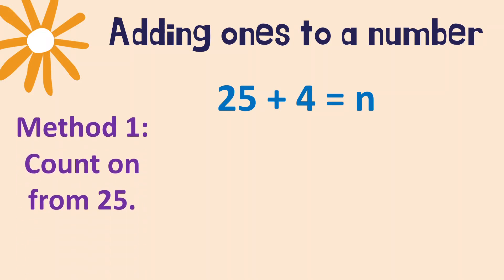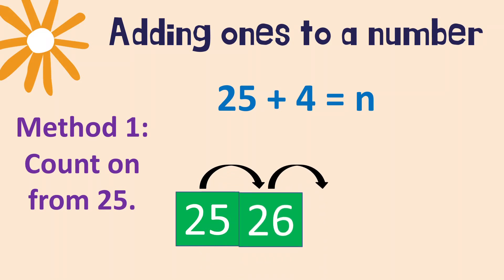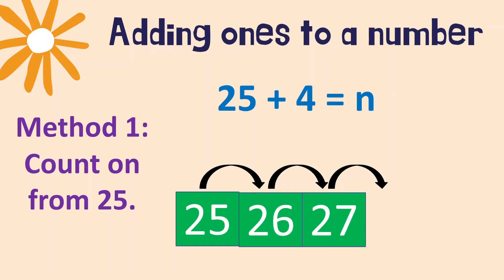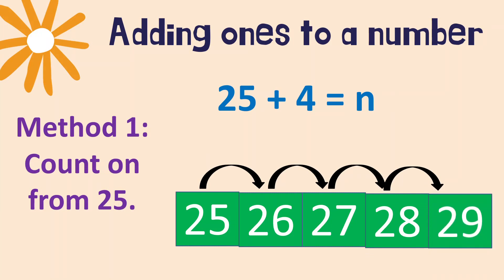The first method we can use is counting on. We count on from 25 and then add 4. Starting from 25: after 25 is 26, after 26 is 27, after 27 is 28, and one more — after 28 is 29. Very good.